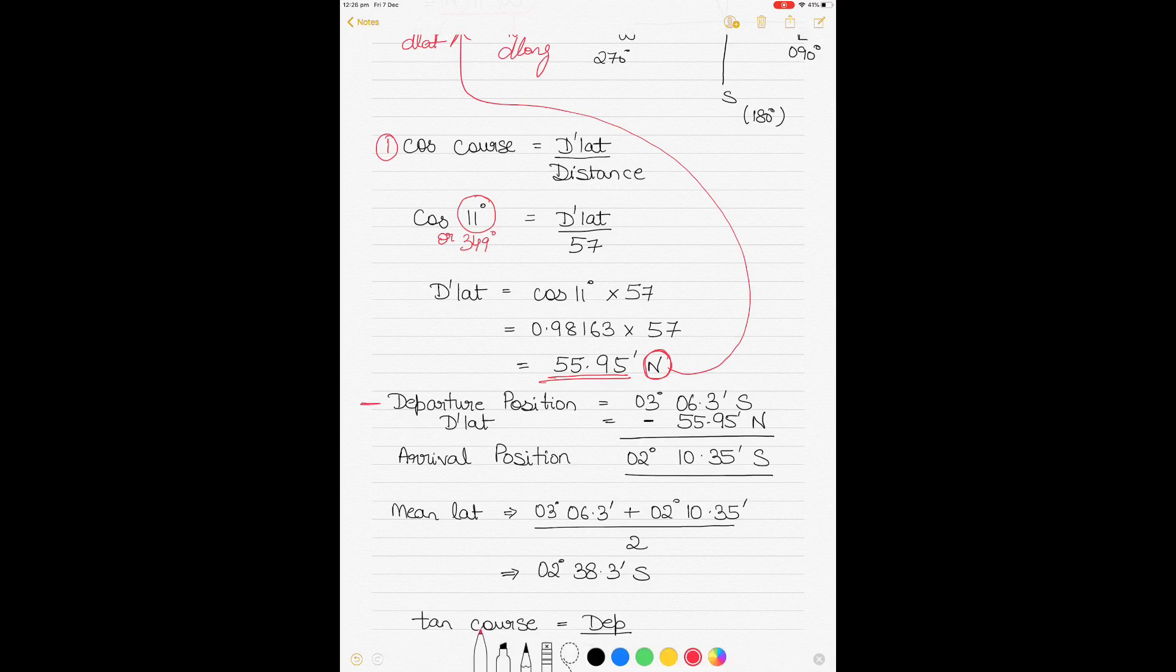Once we have our d lat, we can find our arrival position. The departure position is given in the question. The d lat has been calculated. Because we are traveling in a north fashion, although we are in the southern hemisphere, we are going in a northern direction. Our arrival latitude will decrease but will still be in the southern hemisphere, so we subtract our d lat. The arrival position we get is 02° 10.35' S.